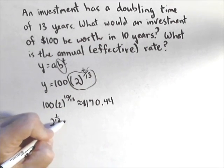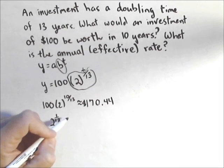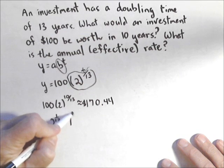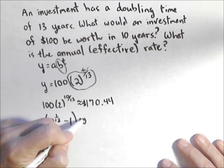What we're going to do with that base, all you've got to do to get your rate, is subtract 1 and multiply by 100%.